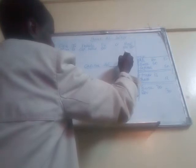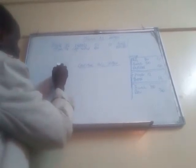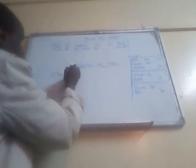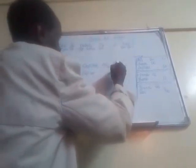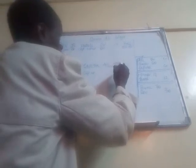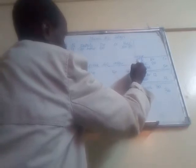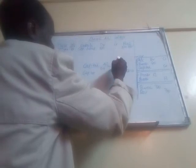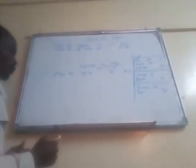In the capital account ledger, for transaction number one on 1st January, the detail is capital introduced. We credit capital by 50,000, and the balance is 50,000 credit. That completes the first journal entry across both the bank ledger and the capital ledger.